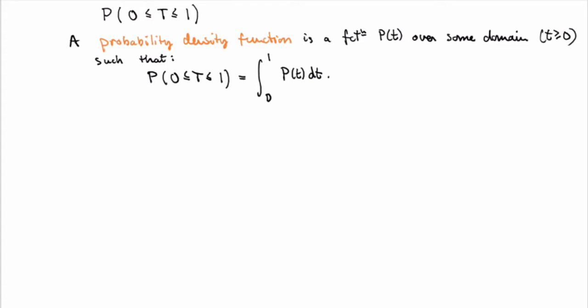Once you have a probability density function, you can ask other questions. For example, what is the probability that the waiting time is greater than two minutes? This would be denoted as P(T ≥ 2), and it would be given by the area under the curve — specifically the improper integral from two to infinity, because the waiting time can be anything greater than two minutes.